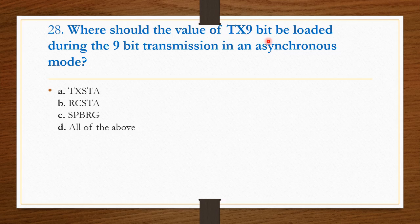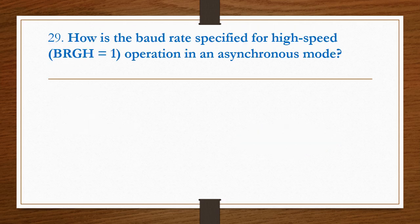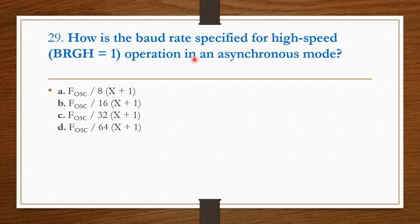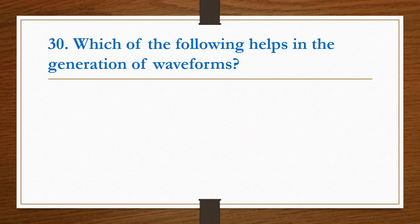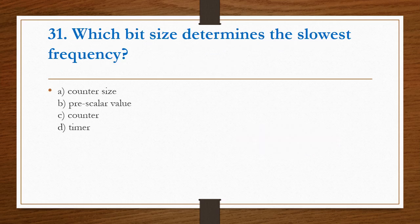Where should the value TX 9 bit be loaded during the 9 bit transmission in an asynchronous mode? TX STA is the right answer. Option A is the right answer. How is the baud rate specified for high speed operation in an asynchronous mode? For high speed operation, it is specified as FOSC (oscillating frequency) divided by 16 into X plus 1. Which of the following helps in the generation of waveforms? For generating waveforms, we use timer. Option A is the right answer. Which bit size determines the slowest frequency? Prescaler value. Option B is the right answer.